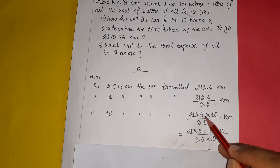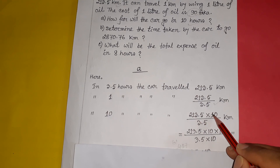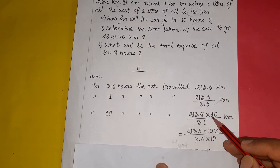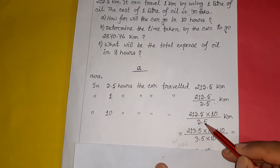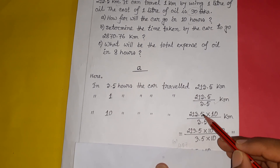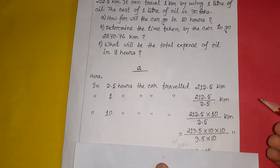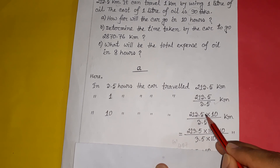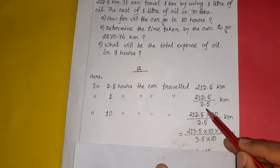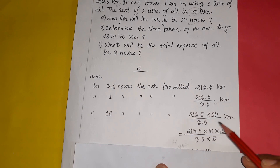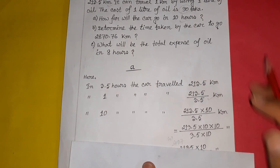Now for the decimal calculation: 213.5 multiplied by 10 gives 2135. This is the initial decimal number. We remove the decimal point — since there is one decimal place, we multiply by 10, making it 2135. Similarly for 3.5, we multiply to remove the decimal. So the decimal is removed from both numbers before we proceed with the division.